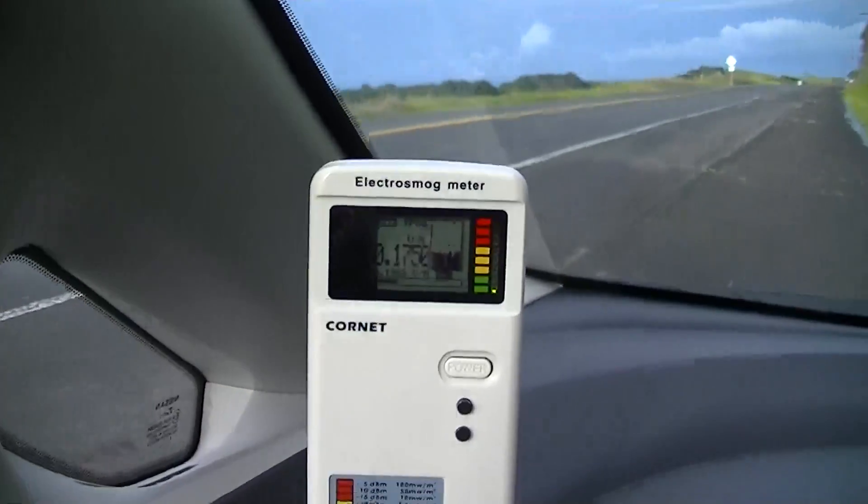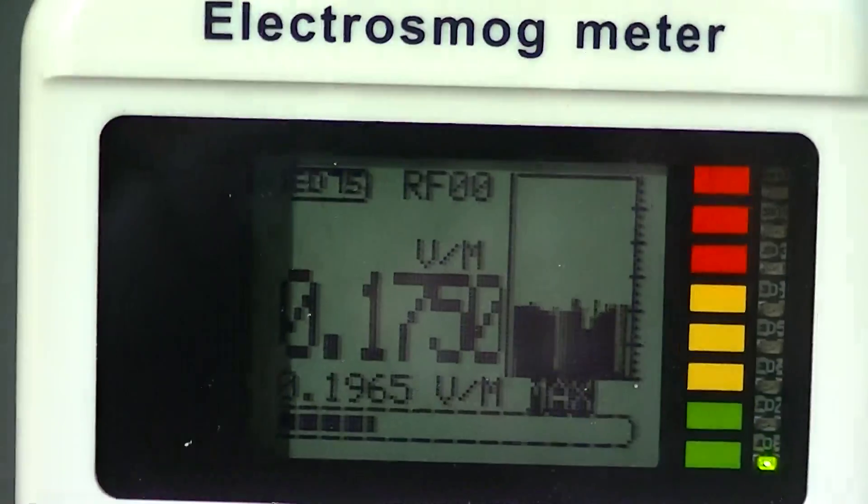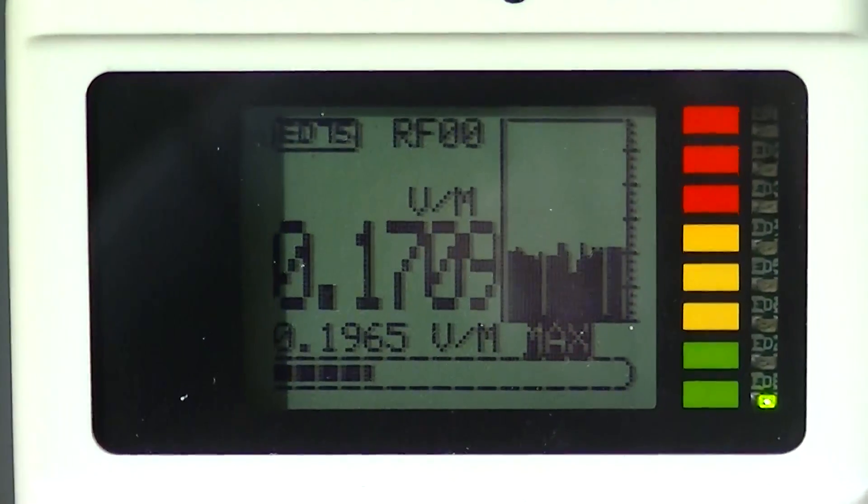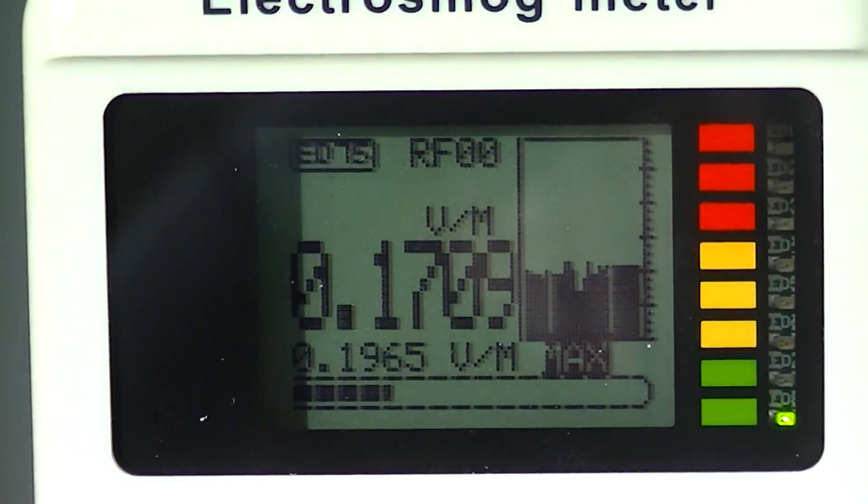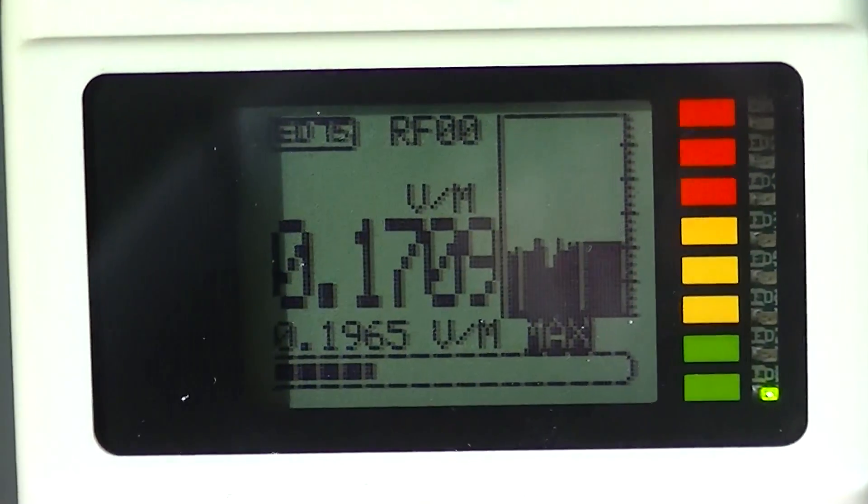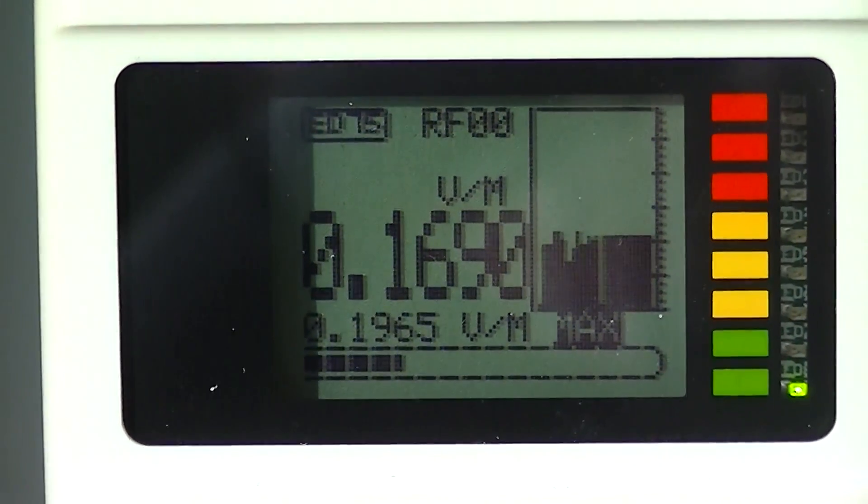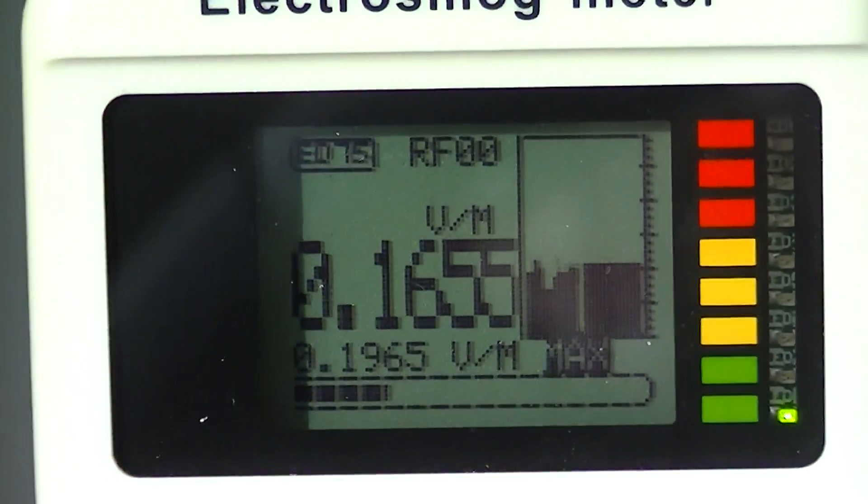So here we go, we've got another burst of radio frequency radiation coming through on the car. All this that you can see on this bar graph display and those high numbers all seems to be coming from the car.